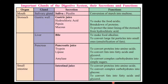Let us now understand some important glands of the digestive system, their secretions and functions. Mouth — salivary gland secretes saliva (ptyalin/salivary amylase), which converts starch into maltose. Stomach — gastric wall secretes gastric juices including hydrochloric acid, pepsin, and mucus; functions include making food acidic, breaking down proteins, and protecting the stomach lining. Liver secretes bile, which makes food alkaline and emulsifies fats.